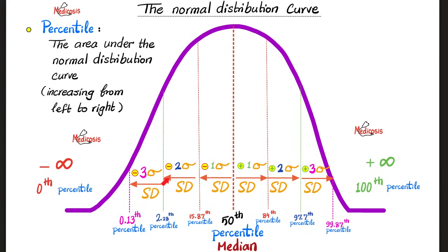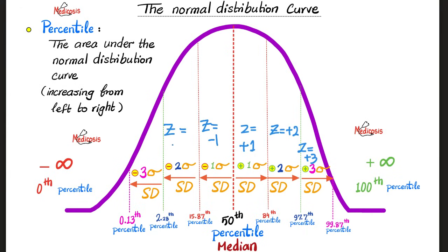Two standard deviations above the mean, two standard deviations below the mean. We say that sigma is positive two if you are two standard deviations above the mean, or sigma is negative two if you are two standard deviations below the mean. And if you're talking about a point whose value is three standard deviations above the mean, the z-score is positive three; three standard deviations below the mean gives a z-score of negative three. So we can say that the z-score is the number of standard deviations.